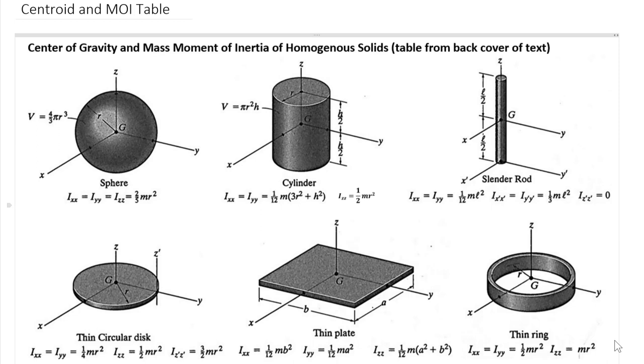We have a sphere, a cylinder, a slender rod, a thin circular disk, a thin plate, and a thin ring. And for each of these, we have mass moment of inertia equations.